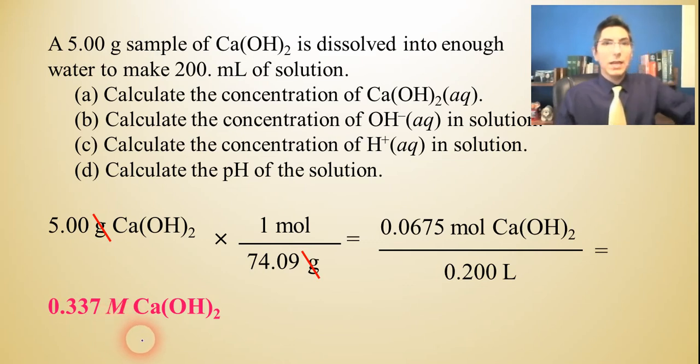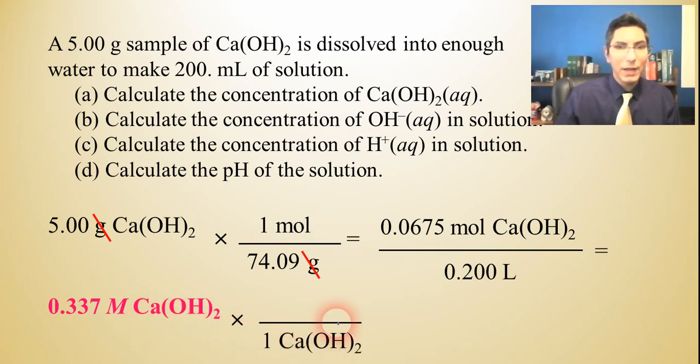Now, what about part B? Calculate the concentration of hydroxide ions. We can take a look at the mole ratio here and notice that if we put calcium hydroxide on the bottom and hydroxide on the top, there are two hydroxides for every calcium hydroxide. We know that because there's a little two right here. That two tells us that there are two hydroxides in every one formula unit of calcium hydroxide.